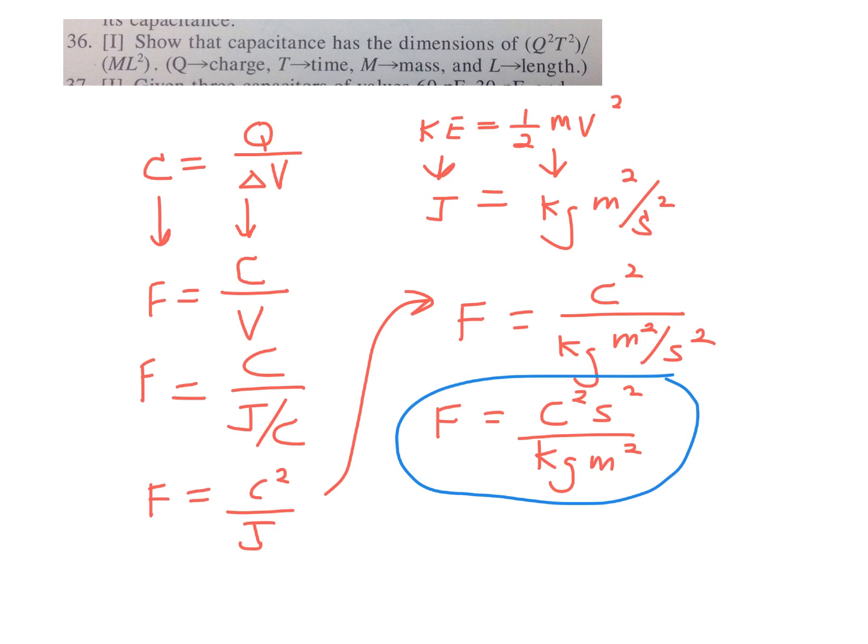So if we switch back into concepts, so on the left-hand side here, the dimensions for capacitance, switching back into the concepts, this is a unit for a capacitance, that C means capacitance, is a Q squared T squared over a mass times a length squared. Back into the concepts. There we go. We've proven what we needed to prove.